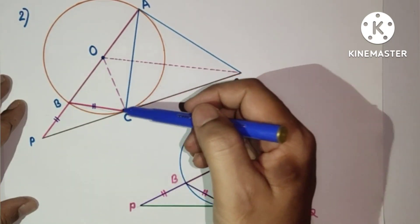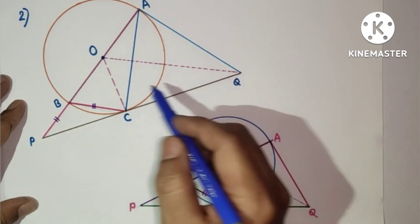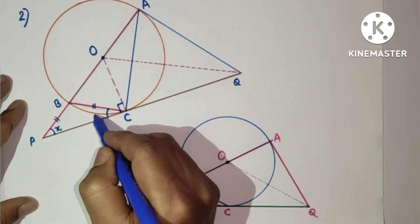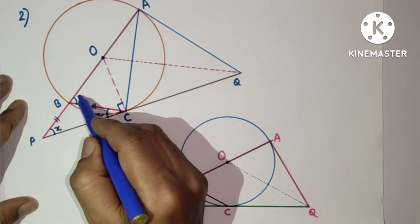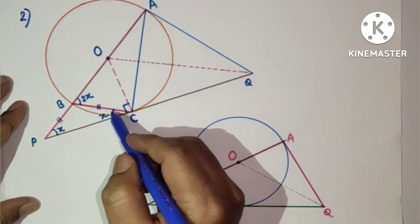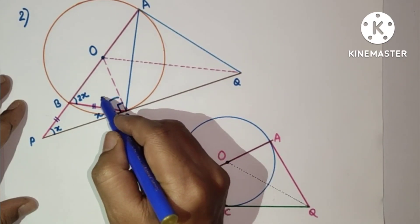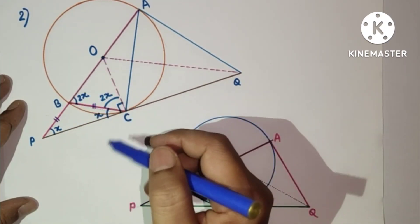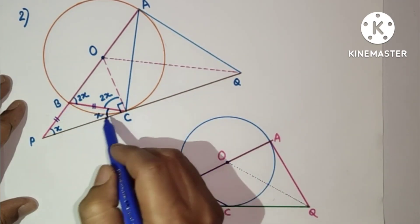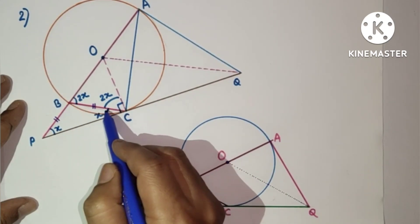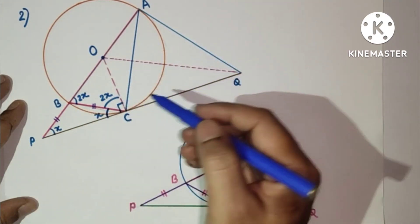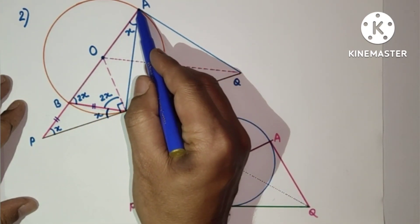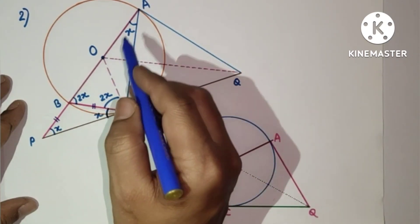In Method 2, we join OQ and CA. Since C is the point of contact and this is a tangent to the center, OC will be perpendicular to the tangent. Let us suppose this is X; this is also X because BP equals BC (given), and therefore this will be 2x. This is X and this is X, so this will also be 2x because OB equals OC, making base angles of the isosceles triangle equal. The angle between the tangent and chord equals the angle in the alternate segment, so this is X. BC subtends X at the circumference, so BC subtends twice this angle at the center.